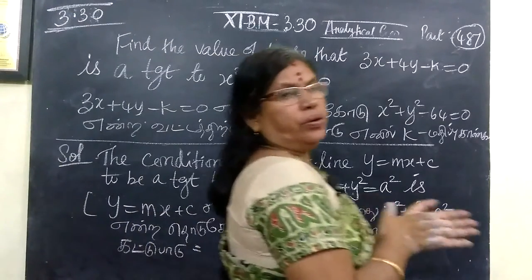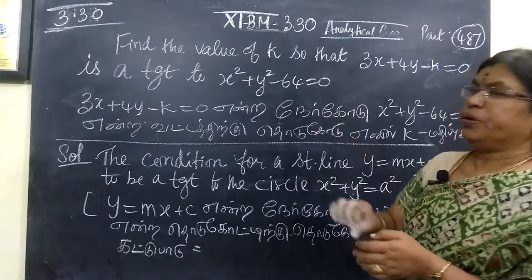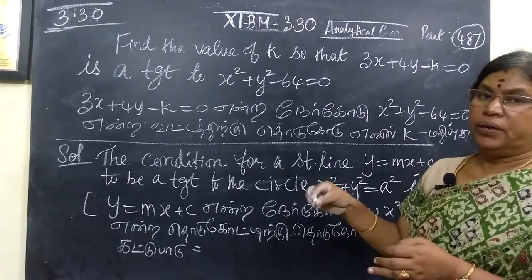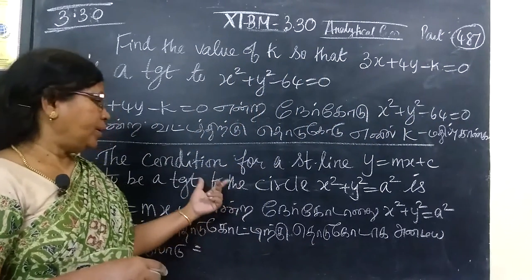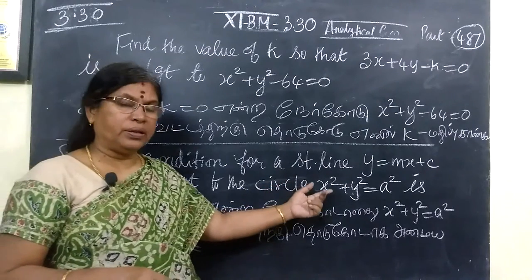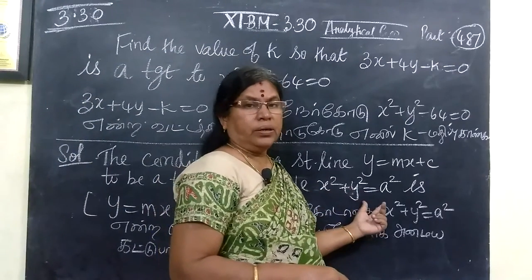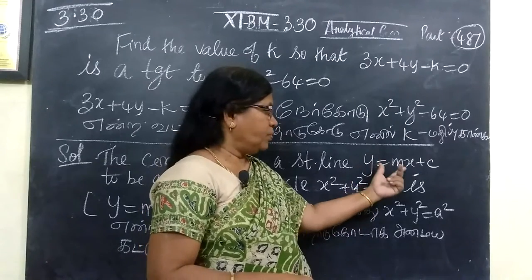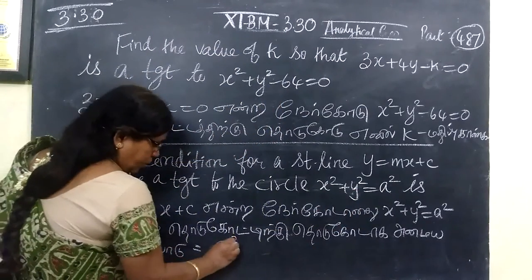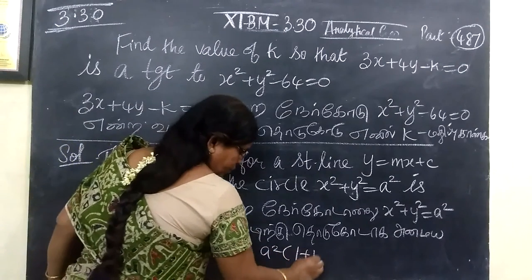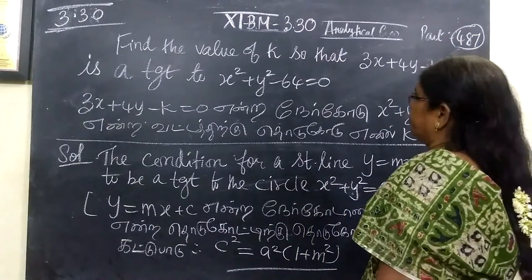This is example 3.30. You are given a straight line. This straight line is tangent. We have K over the length of the tangent, K over the value. We know the condition for a straight line to be a tangent to a circle. The condition is C squared equal to A squared bracket 1 plus M squared. This is a very famous result — you already know it from 10th standard.